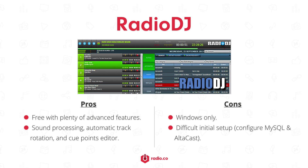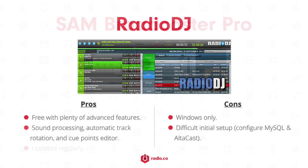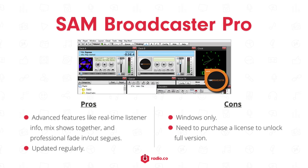Radio DJ is a completely free, live, and automated solution for Windows. It's been around for quite some time, offering a number of features essential for your radio station like automated playlist generation, ID3 tag support, and plugin support like AltaCast to connect and broadcast to your online radio station. Some other standout features include sound processing, automatic track rotation, and a cue points editor. The only downside of Radio DJ is the initial setup, which requires you to install and configure MySQL and AltaCast.